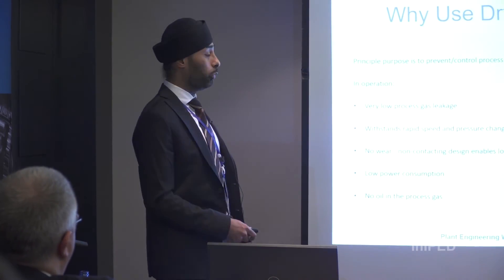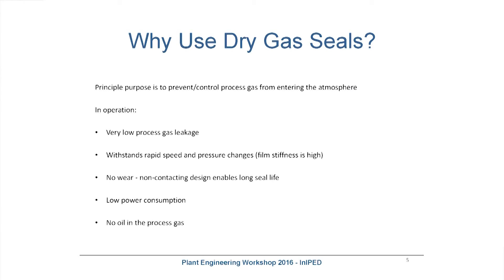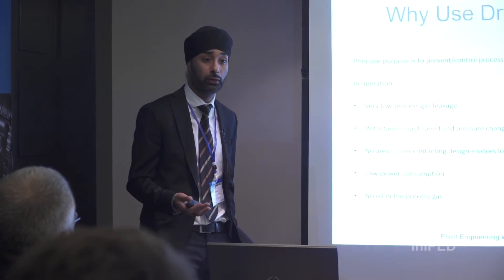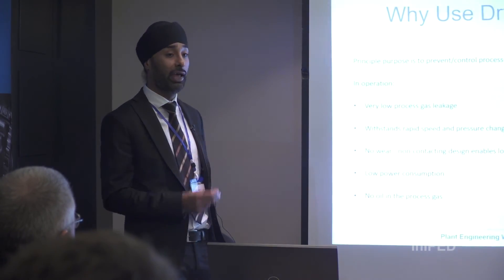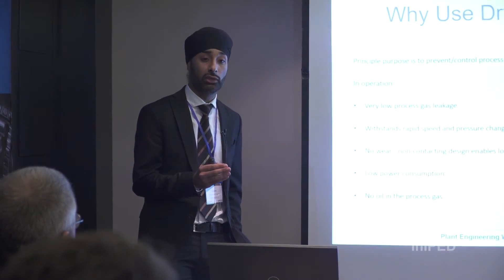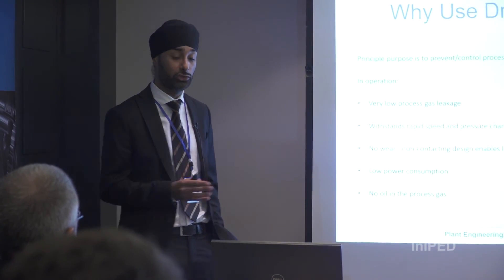Specifically, why would you use a dry gas seal compared to another seal like a labyrinth seal? Dry gas seals have very low gas leakage — anywhere between 10 litres to maybe 300 litres depending on the pressure and speed of the compressor. The groove technology which allows the dry gas seal to work creates a very stiff film between the rotating and the stationary component.